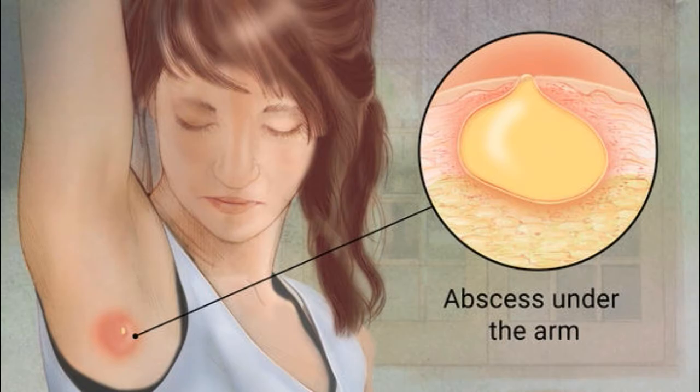Causes of Abscess. Abscesses are caused by obstruction of sweat glands, swelling of hair follicles, or minor breaks in the skin. Germs get beneath the skin or into these glands, which causes a response as the body's immune system tries to eliminate these germs. The middle of the abscess dissolves